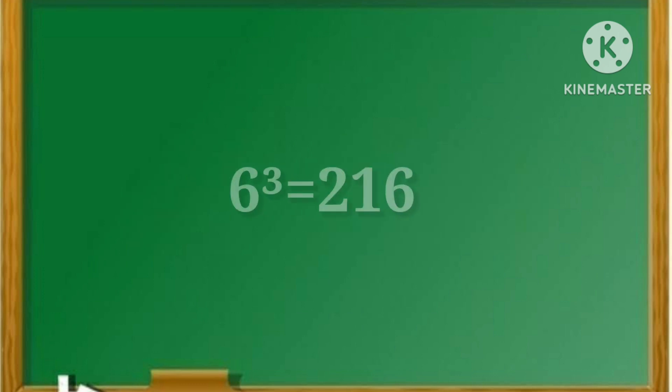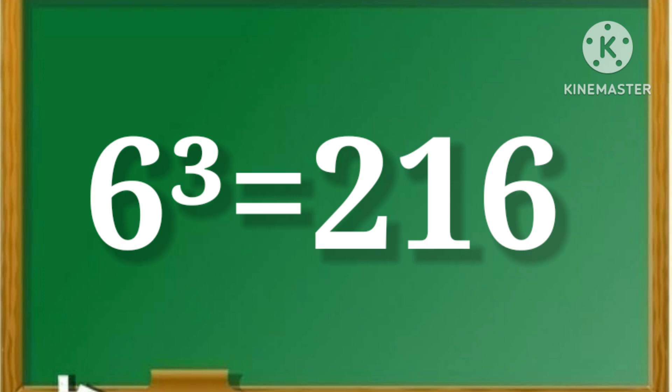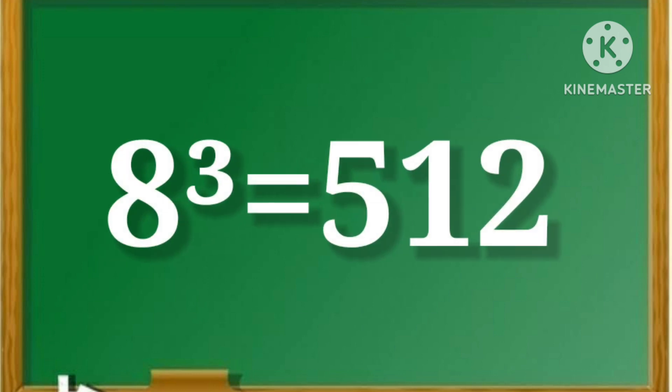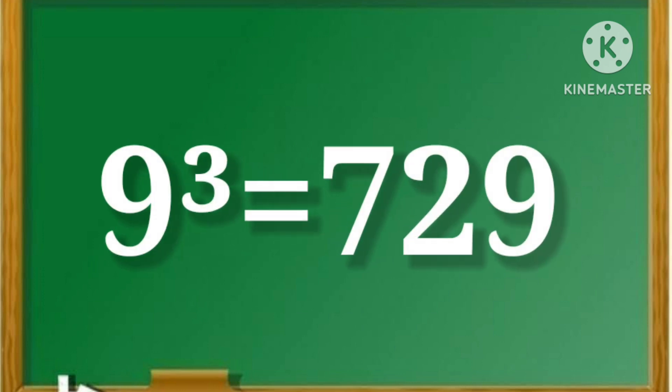6 cube is equal to 216. 7 cube is equal to 343. 8 cube is equal to 512. 9 cube is equal to 729.